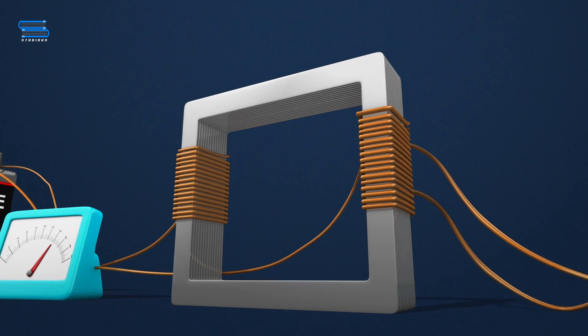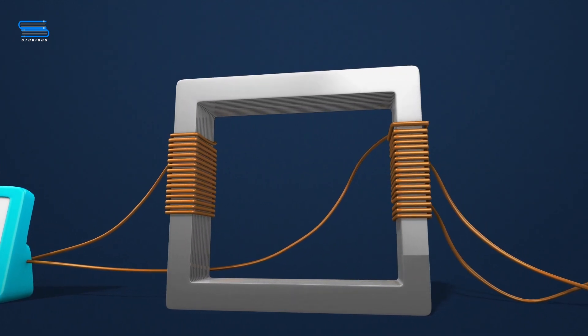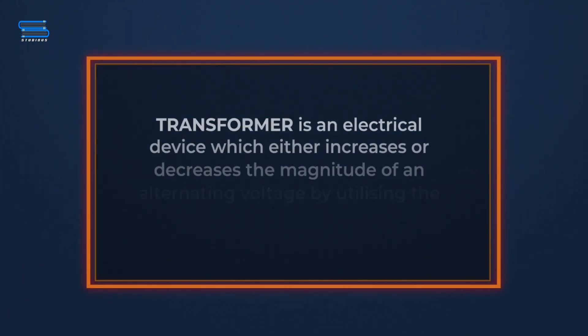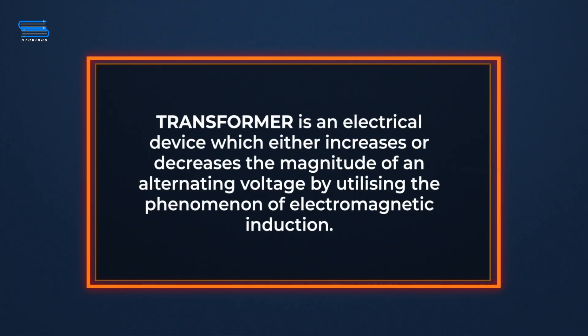Such increase or decrease in AC voltages is achieved through the electrical device called transformer. A transformer is an electrical device which either increases or decreases the magnitude of alternating voltage by utilizing the phenomenon of electromagnetic induction.